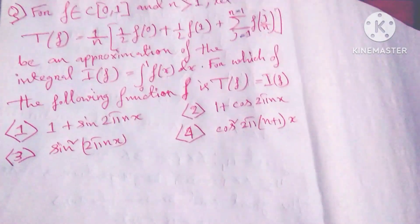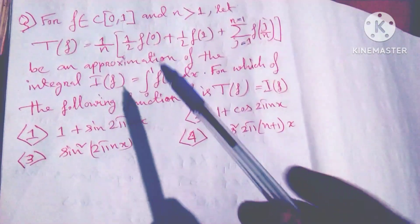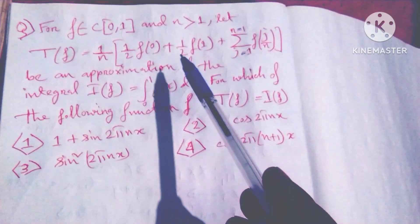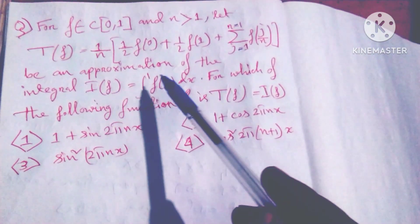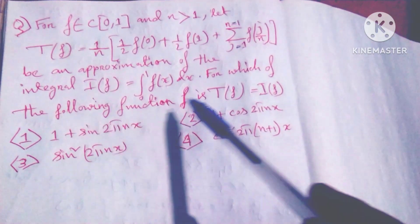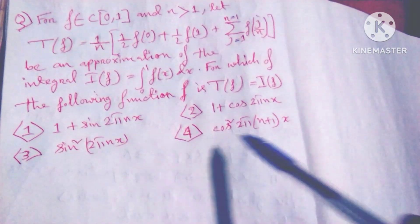Hello dear friends, welcome to my channel. For f such that it belongs to C[0,1] and n less than 1, let T(f) equal 1 by n. This is the approximation of the integral from 0 to 1, and I'll check the following functions.